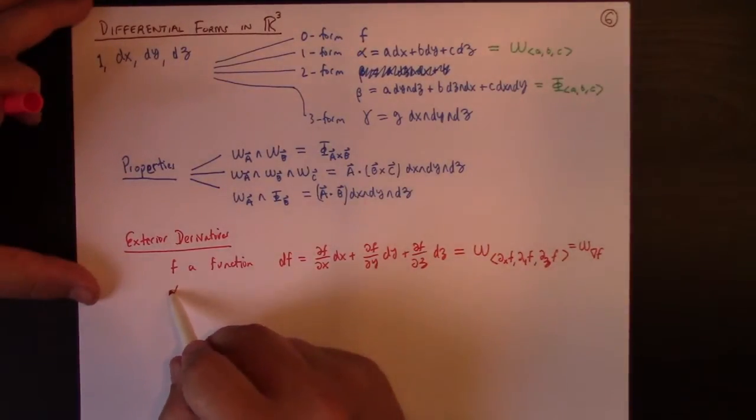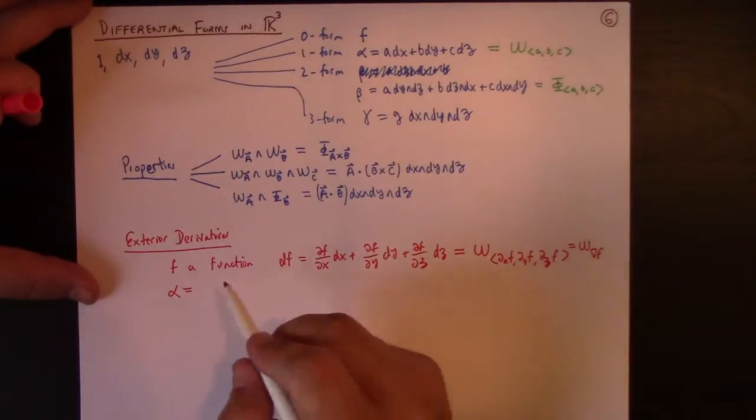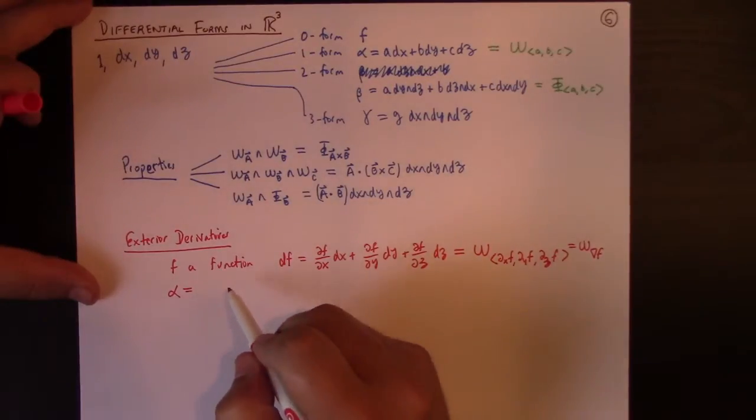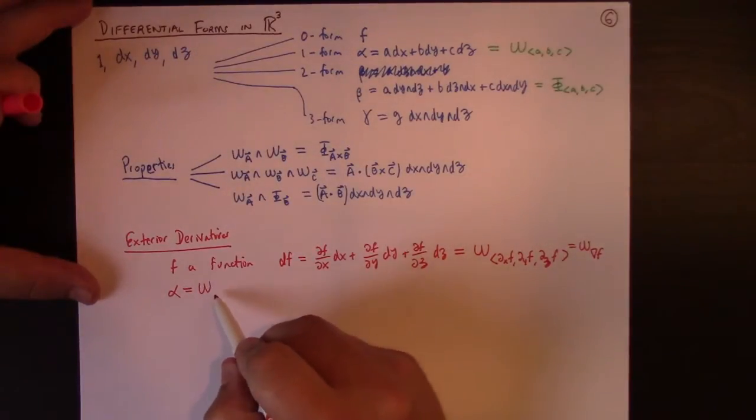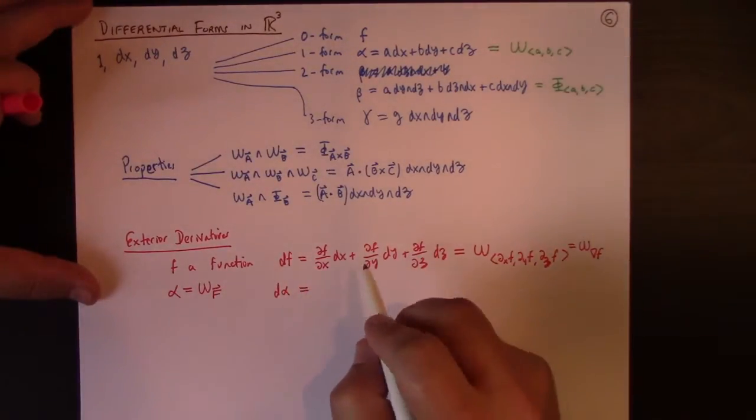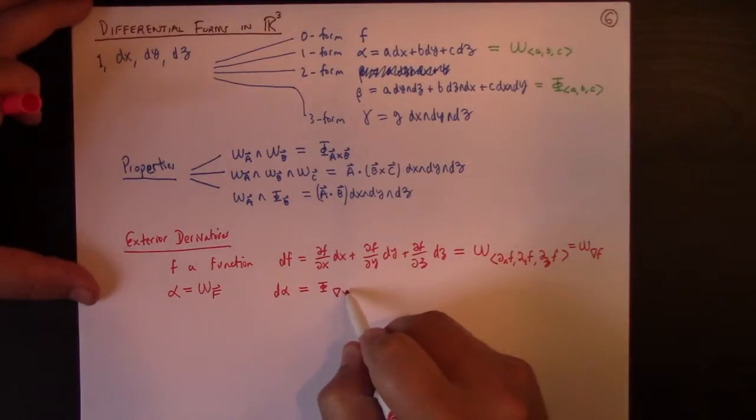So, the exterior derivative of a function gives me back the one form corresponding to the gradient. If alpha is a one form, so let's say alpha is the one form corresponding to the vector field f, you can work it out, but dalpha turns out to be a two form. What two form is it? It's actually the flux form of the curl of f.